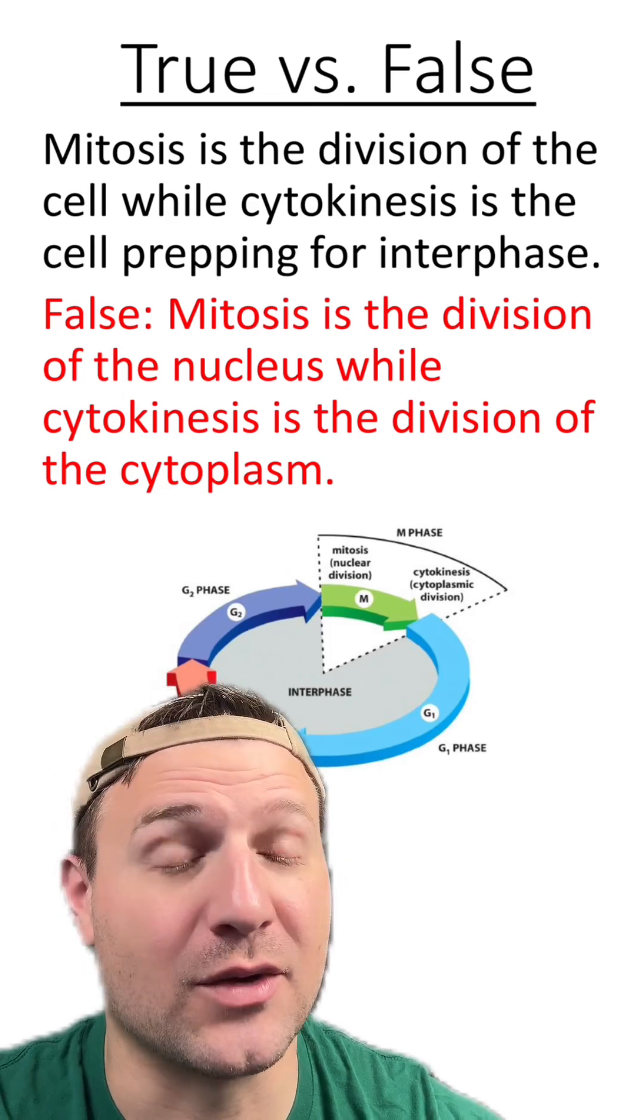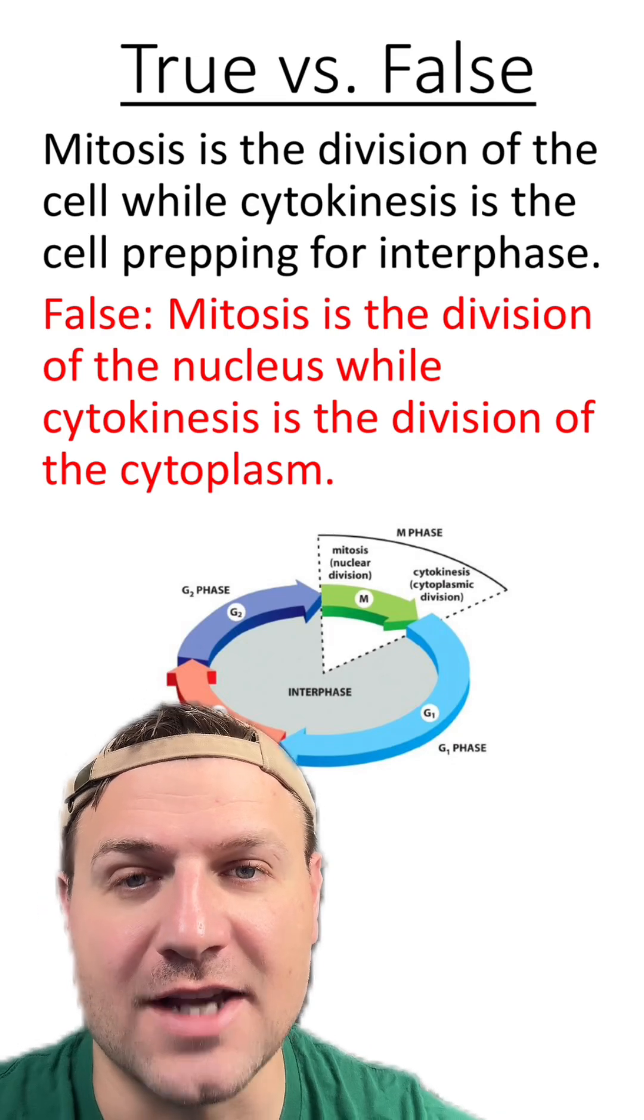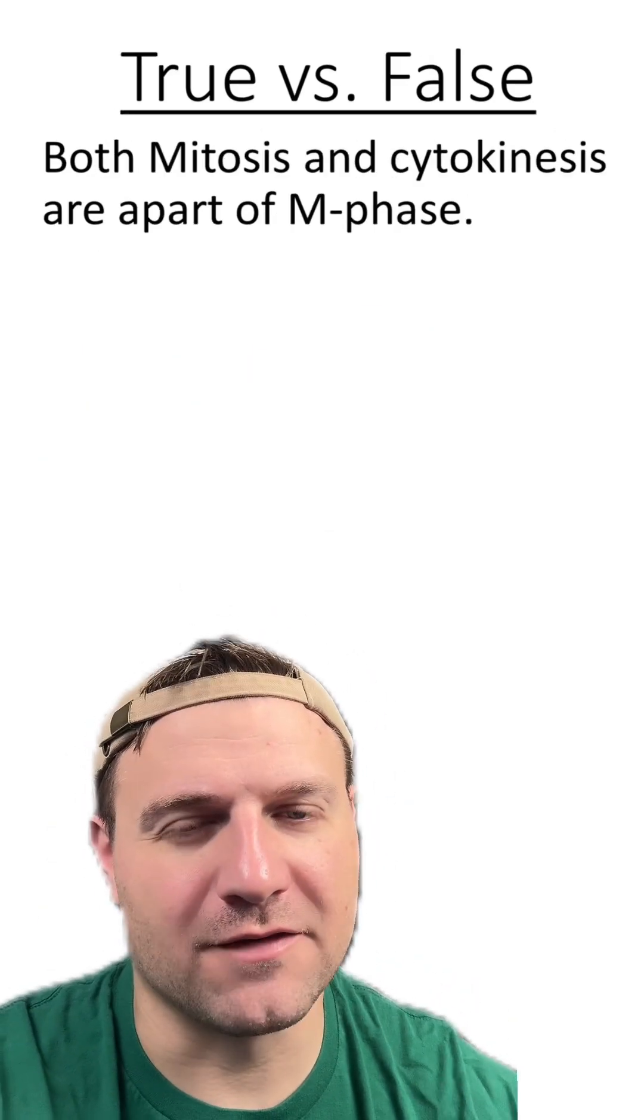Mitosis is the division of the nucleus, while cytokinesis is the division of the cytoplasm. Both mitosis and cytokinesis are a part of M phase.